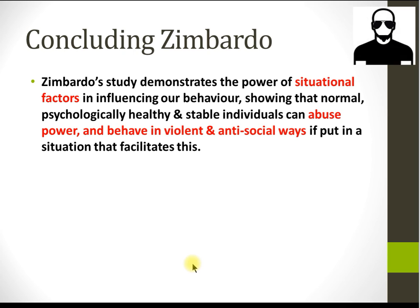Zimbardo says the study demonstrates the power of situational factors in influencing behavior — things such as the power of uniform, identity, identification, and de-individuation, among other key concepts. These are about six or seven key words that, if you include them in an essay, will pull out all the information you need. But this also has huge implications for how we run society, how we run prisons especially — and perhaps schools.